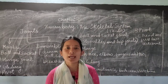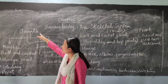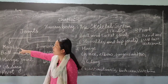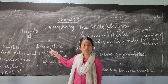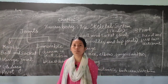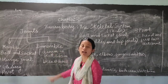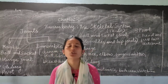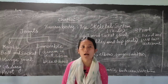Now there are two types of joints. Your joints can be divided into two types: movable joints and immovable joints. First let us consider immovable joints. Immovable joints are those joints which do not allow the movement of body parts.